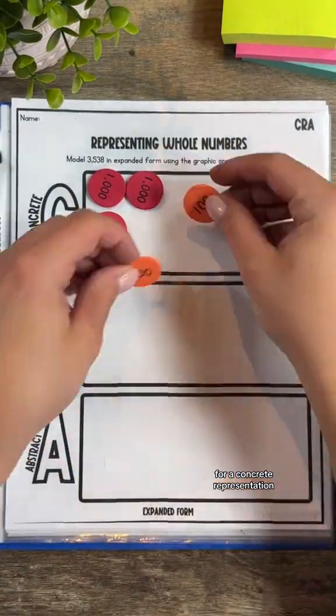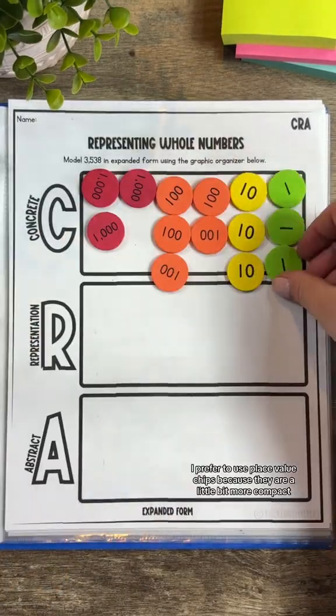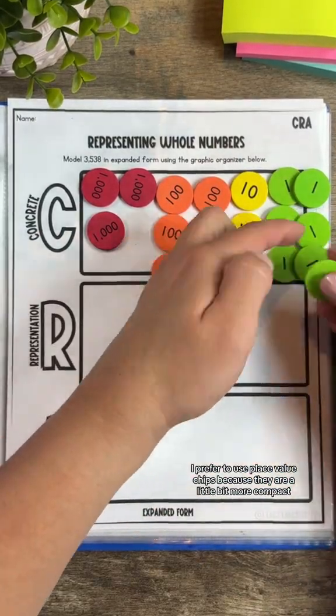For a concrete representation, we could either use place value chips or base 10 blocks. I prefer to use place value chips because they are a little bit more compact.